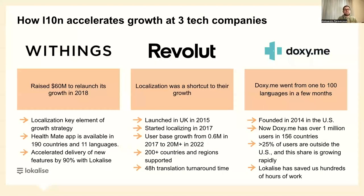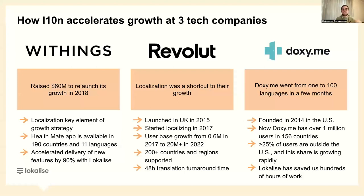Finally, let me showcase a couple of examples of tech companies for whom localization accelerated growth. First, Withings raised $60 million to relaunch its growth in 2018, with localization as a key element of their strategy. Their Health Mate app is now available in 190 countries and 11 languages. Initially, localization was a burden and bottleneck — developers and product managers were unhappy — but by connecting their design and development teams to a single source of truth and agreeing on a common workflow, they accelerated delivery of new features by 90%.